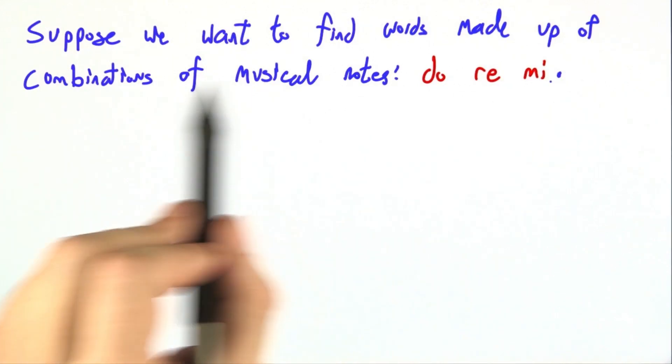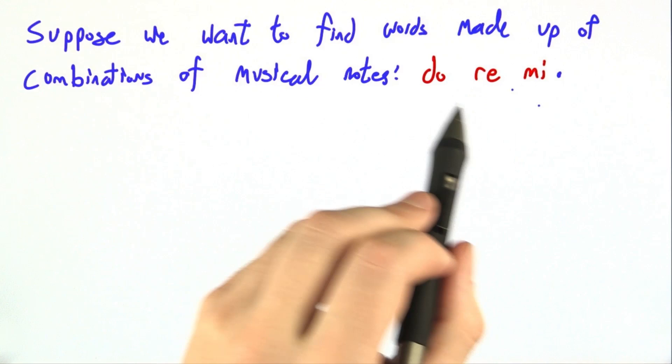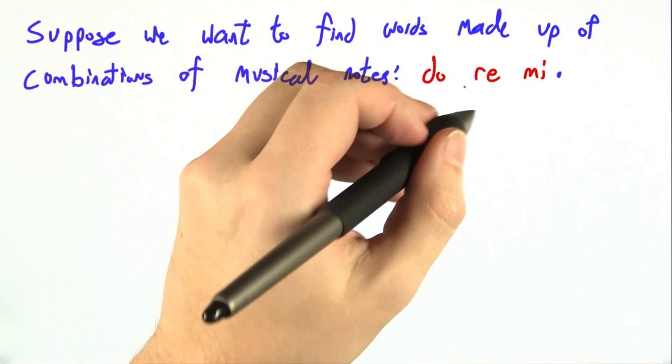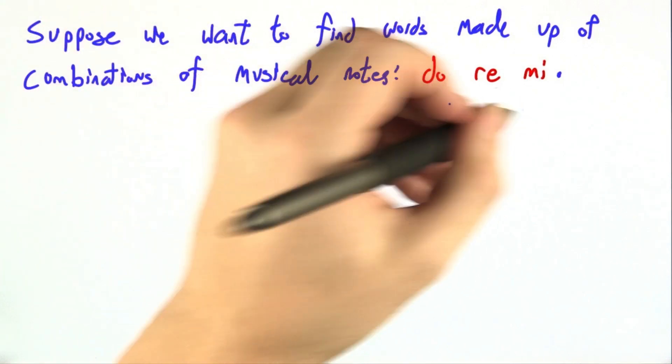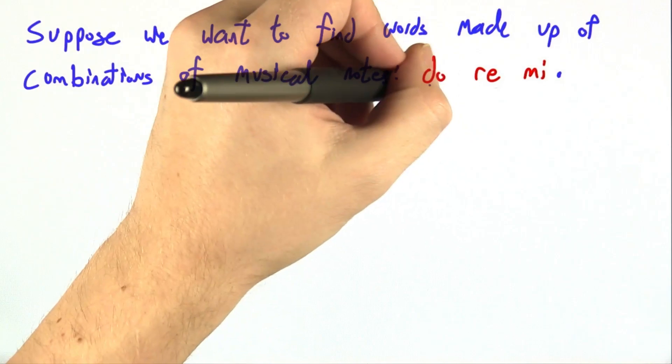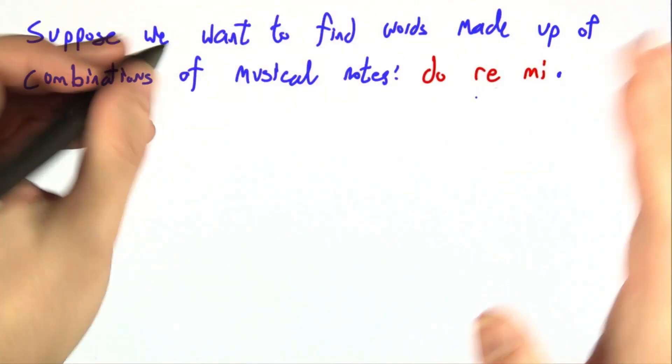Suppose we want to find words made up of combinations of musical notes. In Western music, the notes are often given names, do, re, mi, fa, sol, la, ti, and you could put them together in various combinations, re, fa, fa, do, do, re, stuff like that. Let's say we want to recognize words that are made up of these syllables not in order, but in any combination.